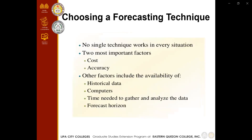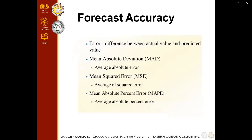When choosing a forecasting technique, no single technique works in every situation. The two most important factors are cost and accuracy. Other factors include the availability of historical data, computers, time needed to gather and analyze the data, and the forecast horizon. Regarding forecast accuracy, there can be error — the difference between actual value and predicted value. We have: Mean Absolute Deviation (MAD) — the average absolute error; Mean Squared Error (MSE) — the average of squared errors; and Mean Absolute Percent Error (MAPE) — the average absolute percent error.